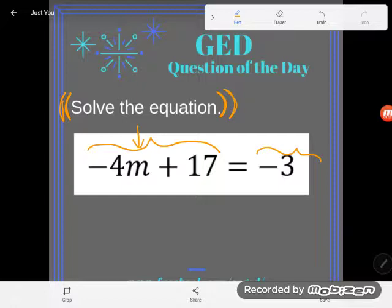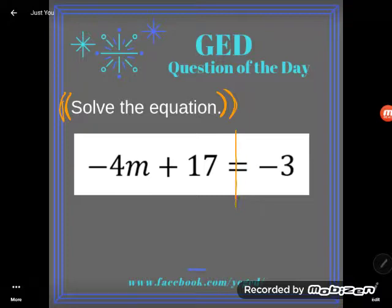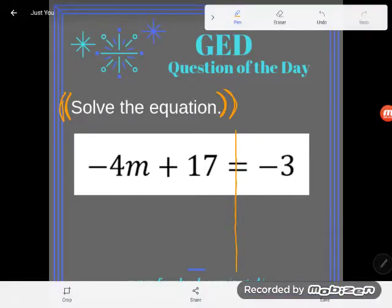I can figure out what m is equal to. So let's go ahead and do that. Let's work to solve this equation to get the letter alone. Okay, so first thing I'm going to do is draw my little line down this equal sign so that I can tell the left-hand side from the right-hand side.